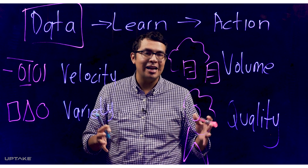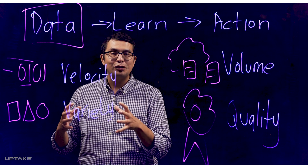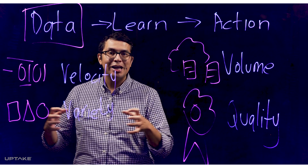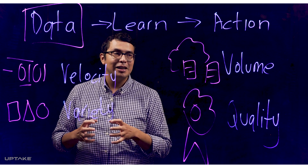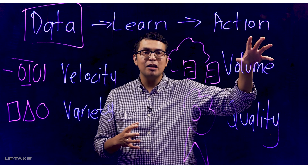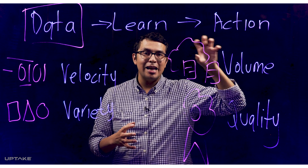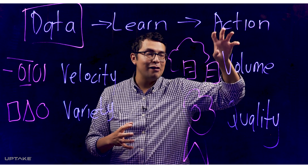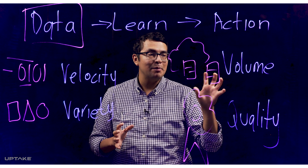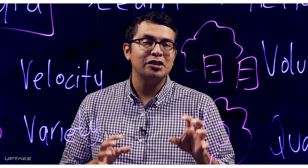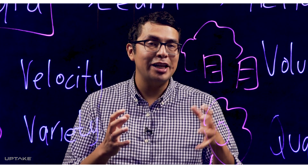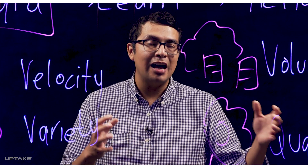To recap: when we're talking about data science, data is very important. We have to think about the speed of that data as it's being generated, the variety of the data and how to combine different data sources to develop data science models, the volume of that data and making it easily accessible for data scientists and models, and the quality of that data — always monitoring such that the data coming into those data science models is in line with expectations.